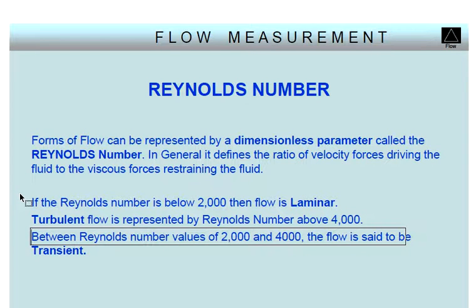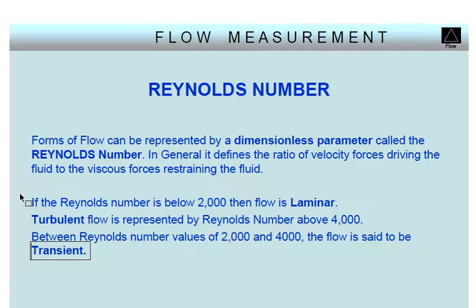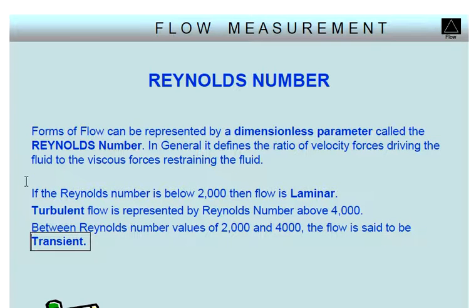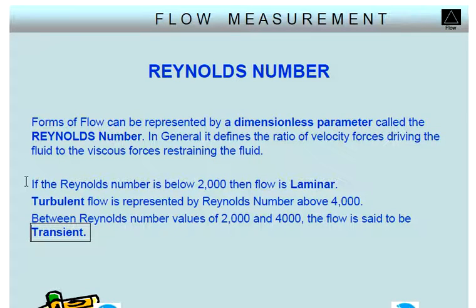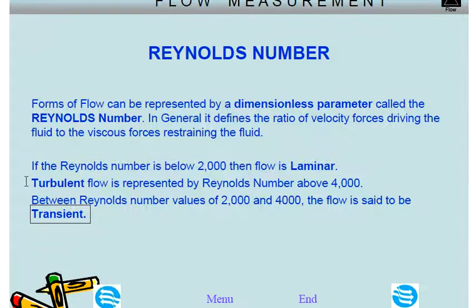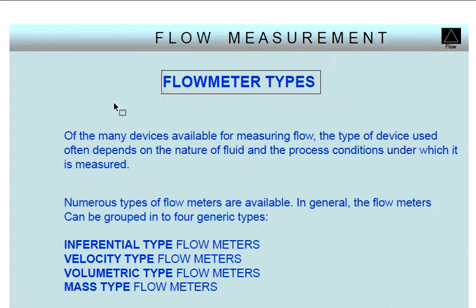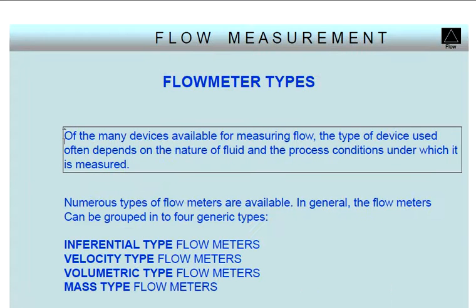Between Reynolds number values of 2000 and 4000, the flow is said to be transient flow.